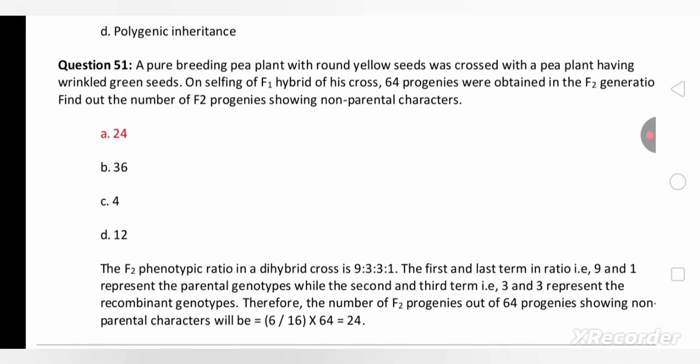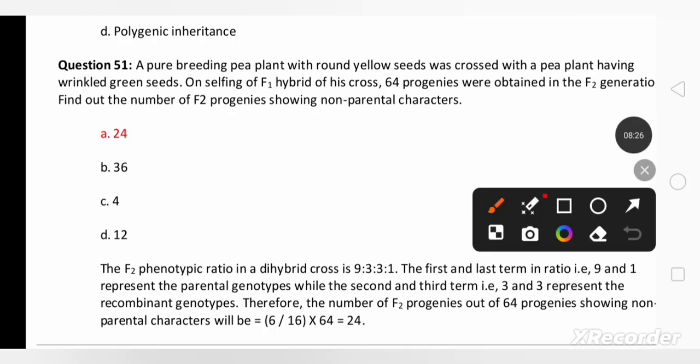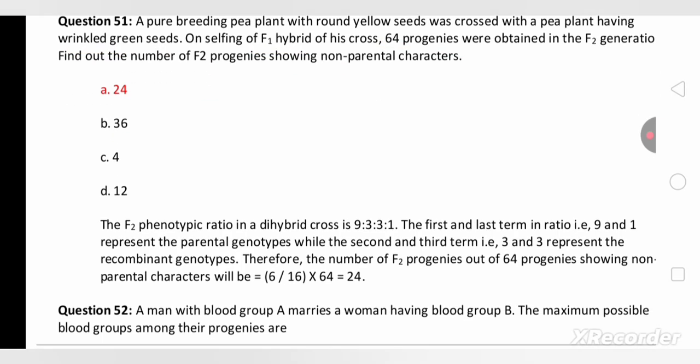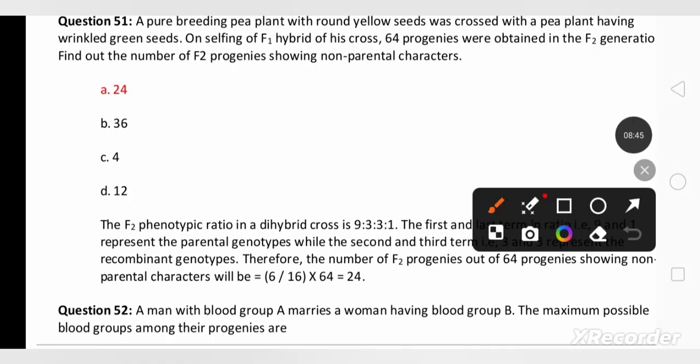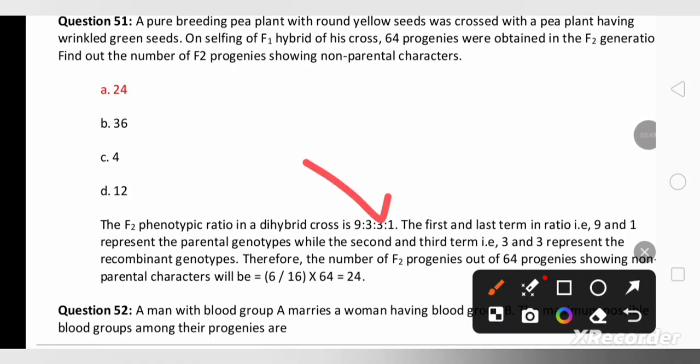In the next question, a pure breeding pea plant with yellow seed was crossed with pea plant having wrinkled seed. It's a dihybrid cross. On selfing of F1 hybrid of this cross, 64 progenies were obtained in the F2 generation. Find out the F2 progenies with non-parental characters. So in dihybrid cross you know the phenotypic ratio is 9 is to 3 is to 3 is to 1, where 9 and 1 are having parental character, 3 and 3 having non-parental characters. So if you divide that 6 with 16 into 64 you will get 24. So 24 offspring will be having non-parental character.